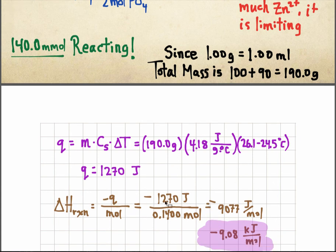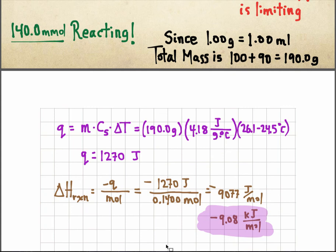And it's exothermic, so I said 1270 kilojoules, sorry, 1270 joules, joules survive, divided by 0.14 moles, which is 140 millimoles of limiting reactant, gives me 9-ish kilojoules. And I still got negative in front, because I knew it had to be exothermic.